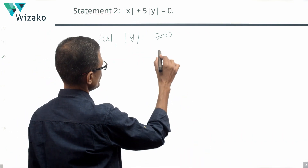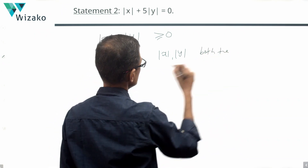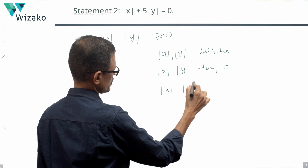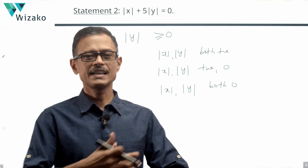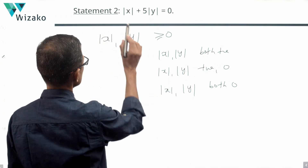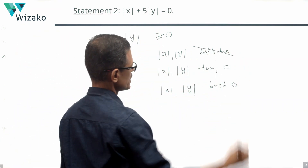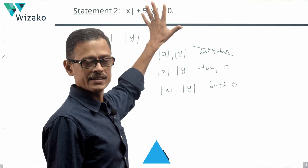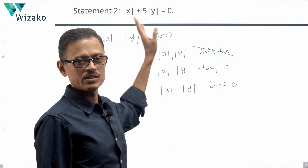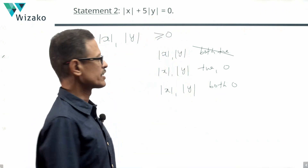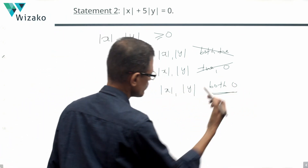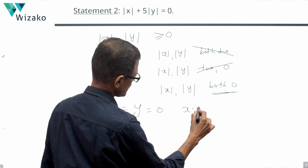The possibilities are: both positive, one positive and one zero, or both zero. If both are positive, a positive number plus 5 times a positive number cannot equal 0 — ruled out. If X is positive and Y is zero, then the modulus of X plus 5 times 0 is positive, not zero — not possible. If X is zero and Y is positive, then 0 plus 5 times a positive number is positive — also cannot equal 0. So modulus of X plus 5 times modulus of Y equals 0 only when both modulus of X and modulus of Y are zero, meaning X equals Y equals 0, and XY equals 0.